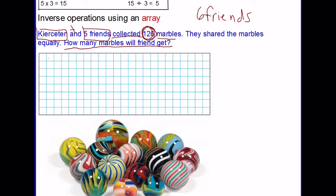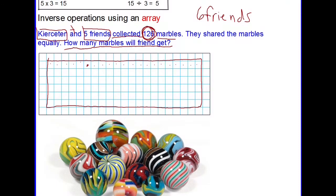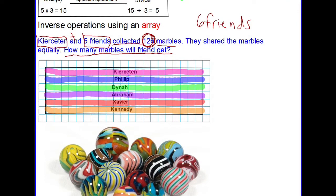They have collected 126 marbles that they're going to share equally. When we look at our array, we have to account for this part, the 126, because that's going to be our area. This is going to be the area of the array, 126, and each one of these units within the area counts for a marble. If this first row here belongs to Kierceton, that would be the number of marbles that she would get. Let's do some computer technology magic to go ahead and add our other friends that she's sharing with.